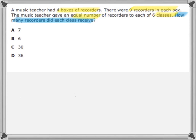Because I see that an equal number of recorders are going to each of his six classes, this makes me think that there are equal groups going on in this problem. When I have equal groups, I usually go to the strategy G-E-T: G standing for the groups that I have, E standing for the equal number that goes in each group, and T for the total.